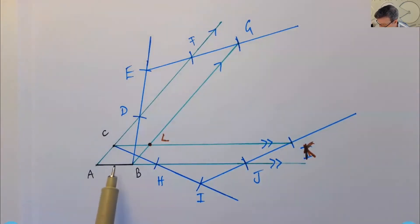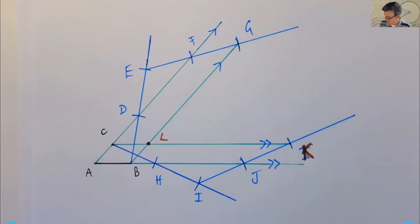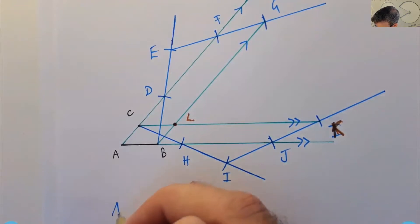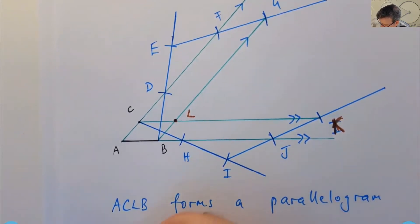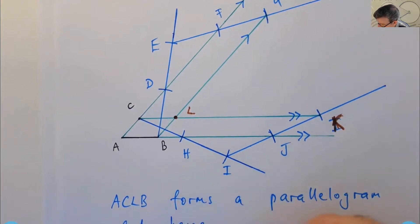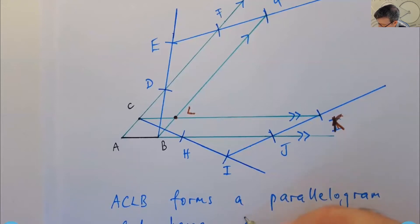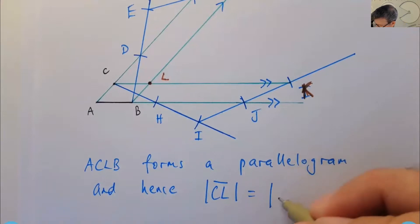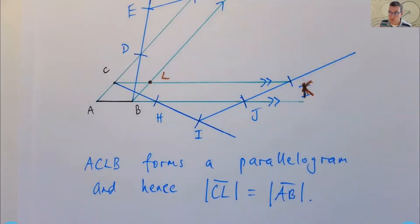And that's true. The sides will be, the opposite sides will also be equal. Okay. So AC, the length of AC will be equal to the length of CL. Okay. So let's just write that down. So ACLB forms a parallelogram. This length equals this length. Okay. So that's pretty much what we wanted to show.